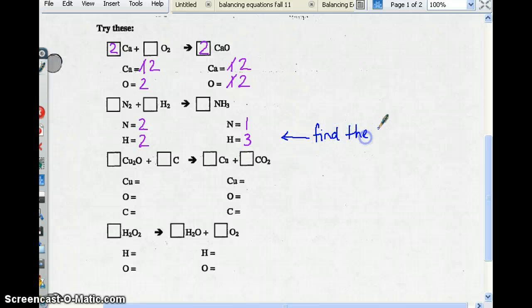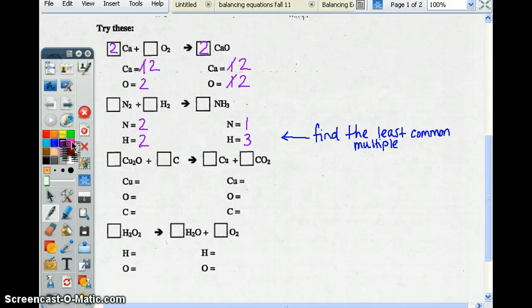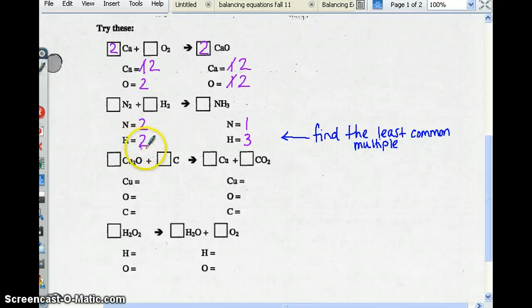We're going to make a note over here: find the least common multiple of two and three in this case. So the least common multiple of two and three is going to be six. So we need this to get to six, and we need this to get to six. I like to start with the side with a compound, because if I put a number here, it's going to affect the entire compound. Where if I put a number here, it only affects the element itself. So I want to change the compound first. In order to get this three to a six, we put a two in. It changes nitrogen to two and hydrogen to six. So now I need the other side of hydrogen to get to six. If we put a three in, that's going to do three times two, get us to six. We have nitrogens at two and hydrogens at six.